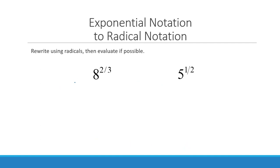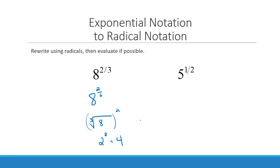Let's do an example of rewriting rational exponents as radicals. Take 8 to the 2/3 power — it's almost like your fraction lays down, because this becomes the cube root of 8 raised to the second power. I prefer to write it this way because it's easier to take the cube root of 8 first. The cube root of 8 is 2 because 2 times 2 times 2 gives you 8, and then raising that to the second power gives you a final answer of 4.